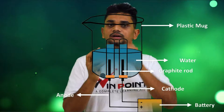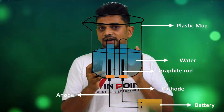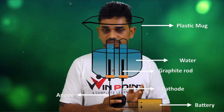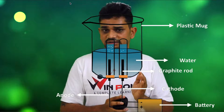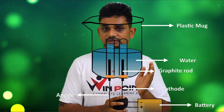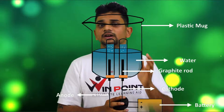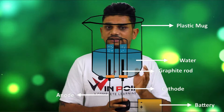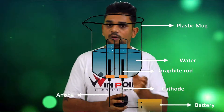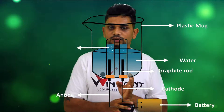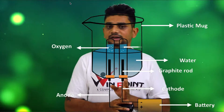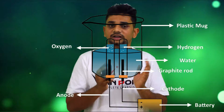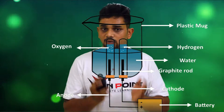Here you can see inverted test tubes. We are collecting gases in these test tubes. Here you will get gases in the form of bubbles — you can see the bubble formation. This bubble formation is because of the gas formation. Hydrogen and oxygen gases are forming in these two test tubes. Here you can see oxygen bubbles and here you can see hydrogen bubbles. It is the experimental setup of the decomposition reaction of water.